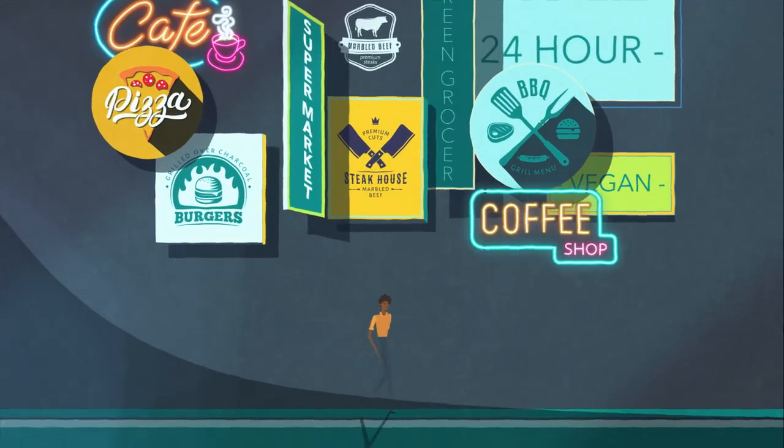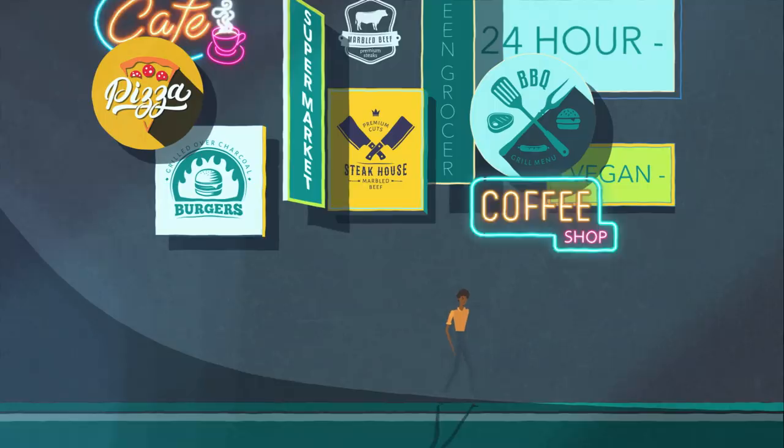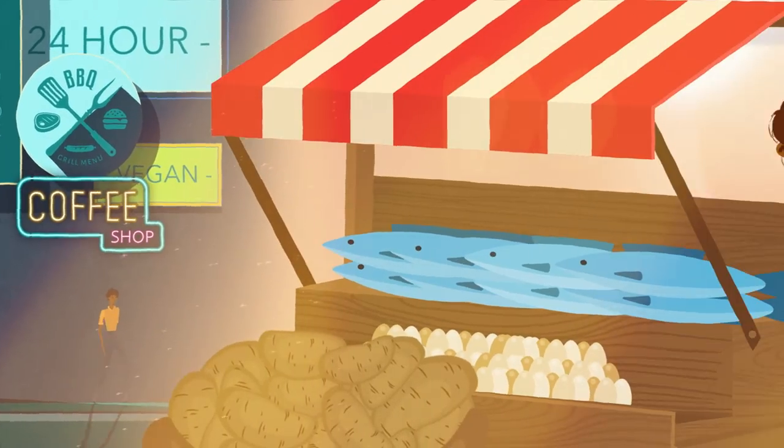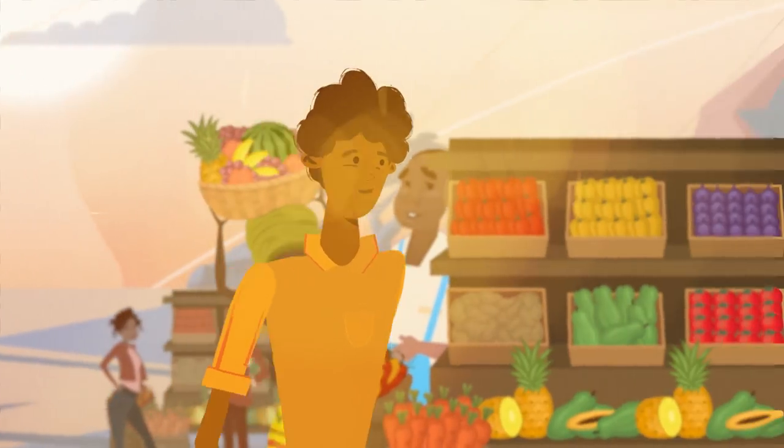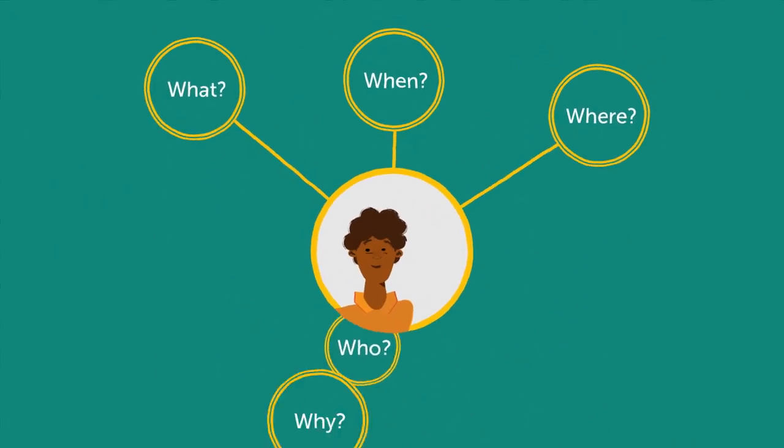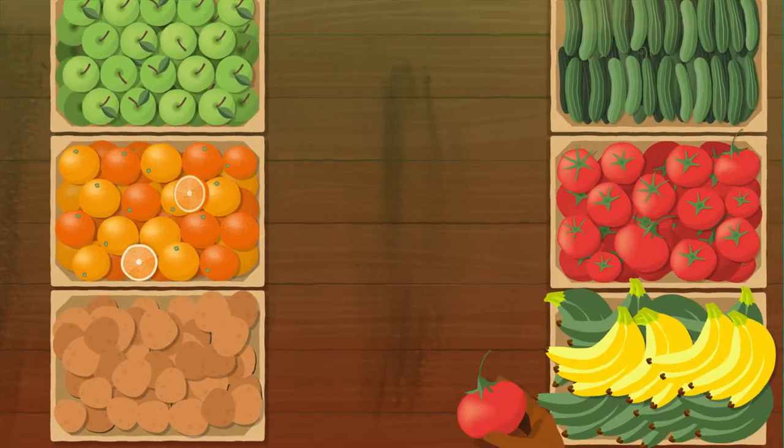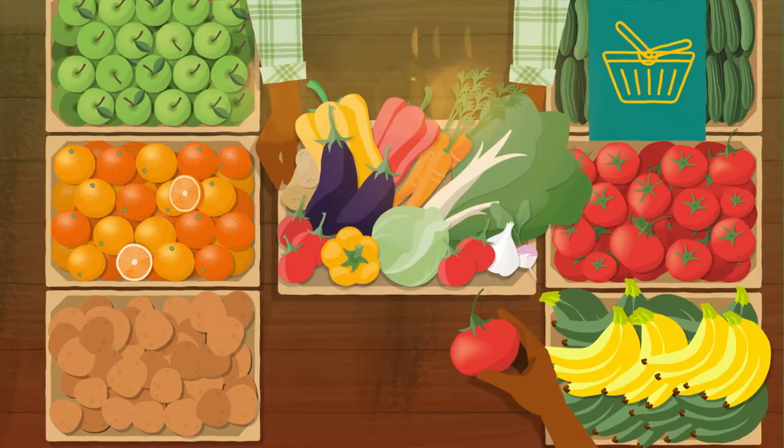New insights on food security and malnutrition in all its forms may be gained by addressing food environments in low- and middle-income countries, focusing on the who, the what, the when, the where, and the why of food acquisition.